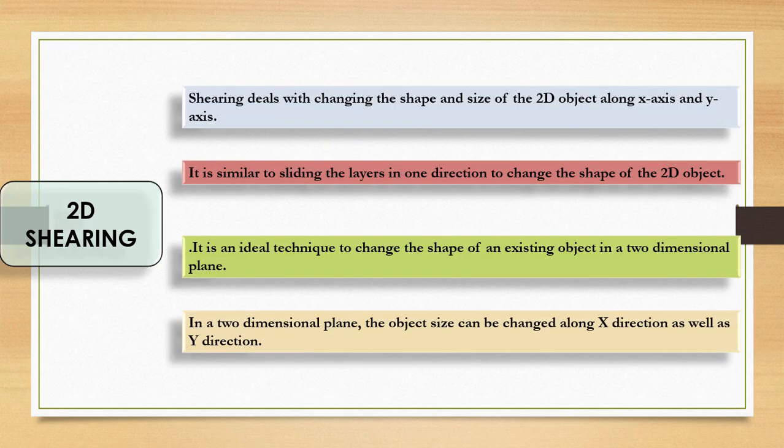Shearing is nothing but the slanting of an object along the X or Y axis. It deals with changing the shape and size of a 2D object along the X axis and Y axis, or you can slant the object along both axes. It is similar to sliding a layer in one direction to change the shape of the 2D object in the two-dimensional plane, where the object size can be changed along X direction, Y direction, or both directions.